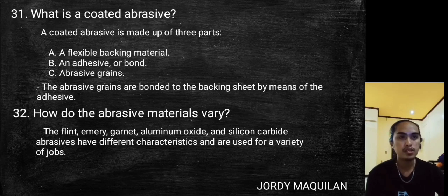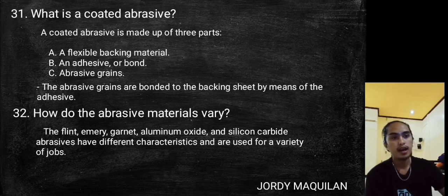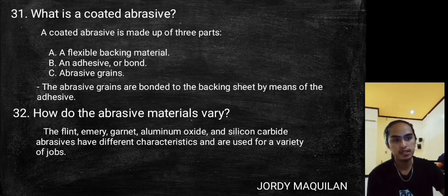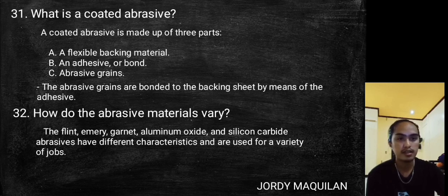What is a coated abrasive? A coated abrasive is made up of three parts: a flexible backing material, an adhesive or bond, and abrasive grains. The abrasive grains are bonded on the backing sheet by means of the adhesive.